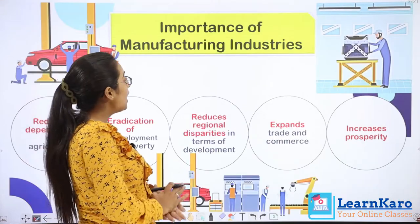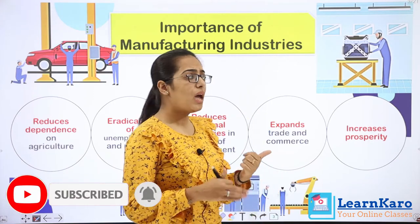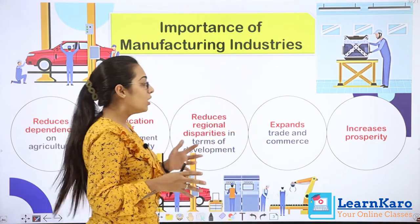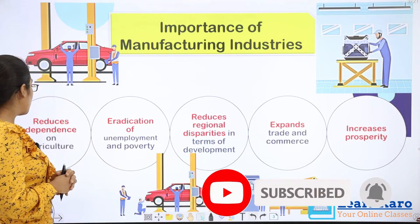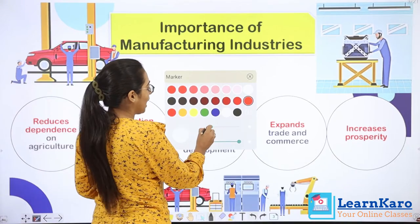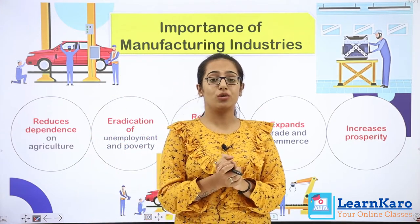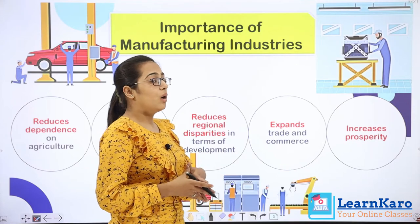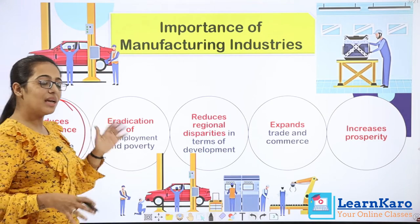Now what is the importance of manufacturing industries? Number one: employment generation. If there is employment generation, income will also increase and poverty will also decrease. Our country is developing and growing. Number two: it reduces dependence on agriculture. In agriculture there is a lot of dependency — for example, on rain. But through manufacturing, we use technology and implement it in our lives, reducing reliance on agriculture.